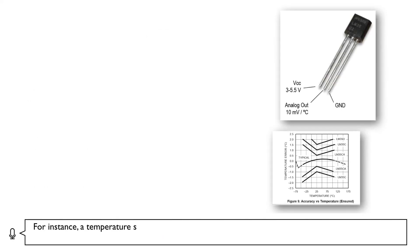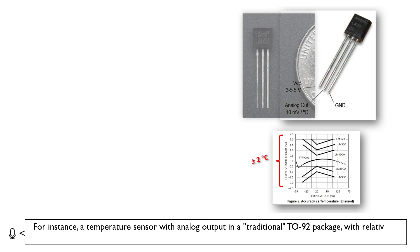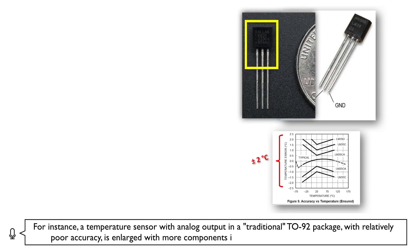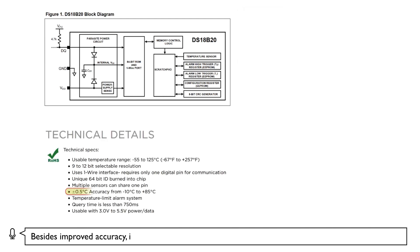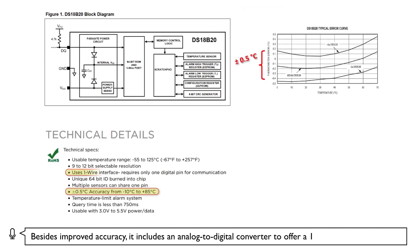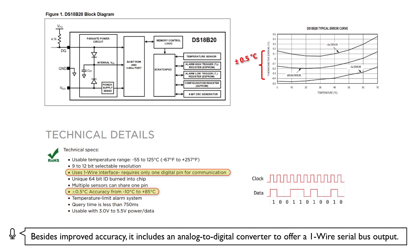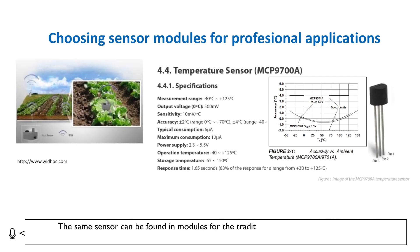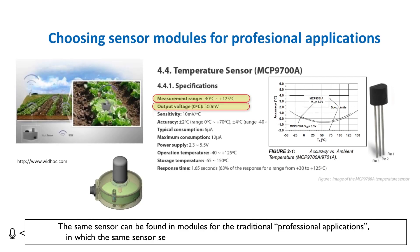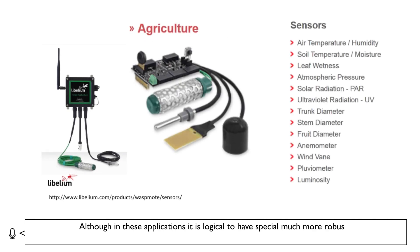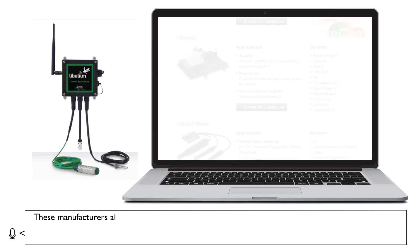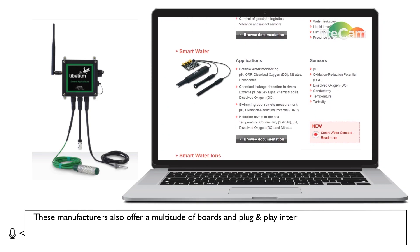Not all breakout boards look the same. Some simple packages could be identified as primary sensors, but they are really much more. For instance, a temperature sensor with analog output in a traditional TO92 package with relatively poor accuracy can be found in an enhanced model with the same package that includes improved accuracy and an analog-to-digital converter offering a one-wire serial bus output. The same sensor can also be found in modules for traditional professional applications, following the same sensor selection process we have already learned.